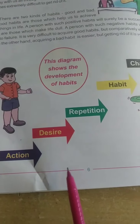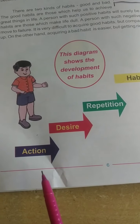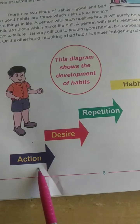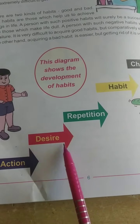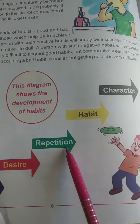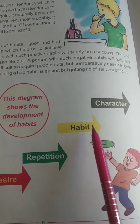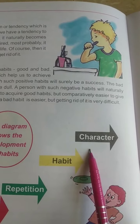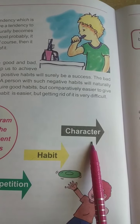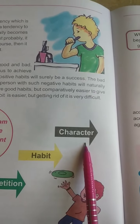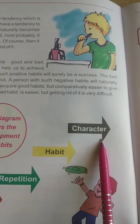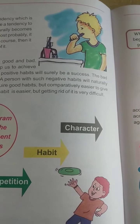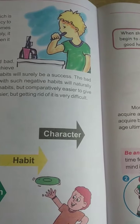To develop good habits, you can see in this diagram how: first, you develop action, then desire, then repetition of good habits, then habit forms, and then it makes your character. At the higher level, if you develop good habits, you become a successful person in life. The rest of the chapter we will discuss in the next video.